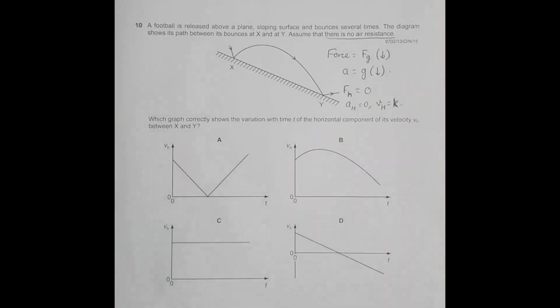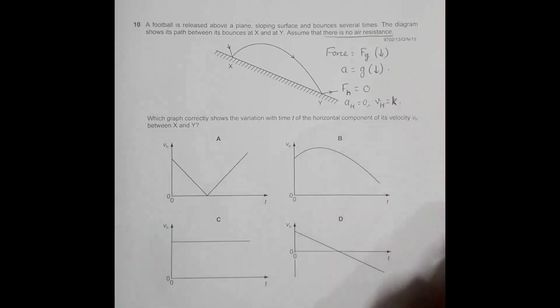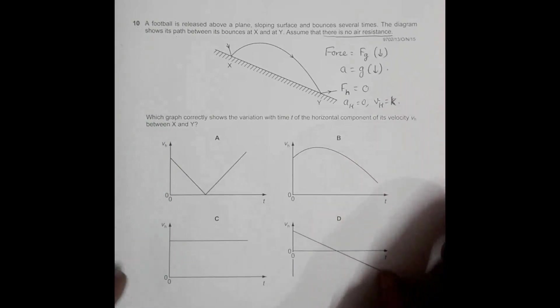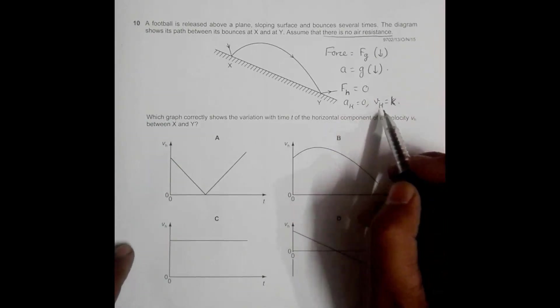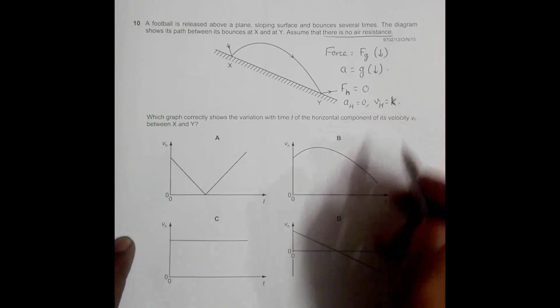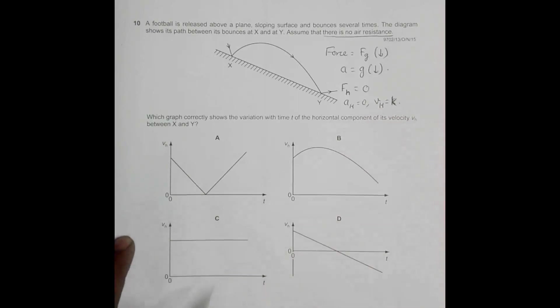So as we can see, the horizontal force is zero, which means that the horizontal acceleration is zero, which means that the horizontal velocity should be constant. So now we have to search for that graph in which the horizontal component of velocity is constant.